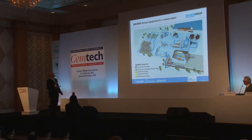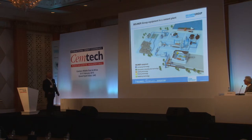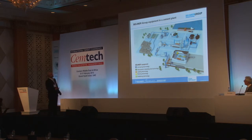Here we'll show you where we can also have our bucket elevators. We can have them in the areas where we are feeding our vertical mills. Also, if we move to the clinker storage, we can have equipment on the storage area and on the vertical bucket elevators in that region as well.